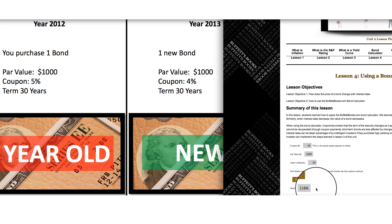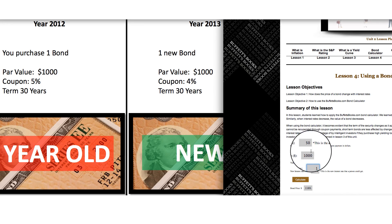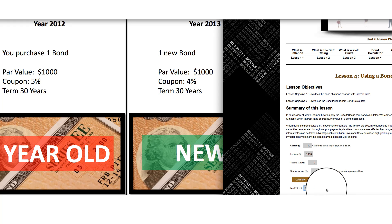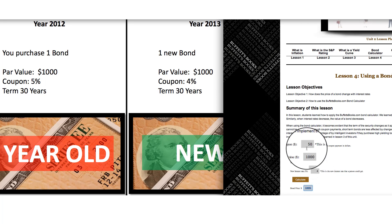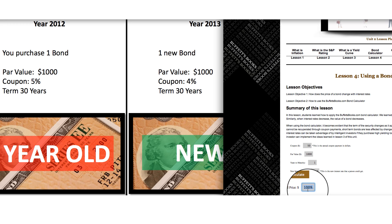What would happen if we changed the years to maturity so only a few years were left? Let's put in one year left on this bond — as if you held it for 29 years and there's only one year left on this 5% bond compared to a 4% coupon bond. The price drops to $1,009. The reason is that the buyer only gets the par value of $1,000 back at maturity, so they only benefit from 1% more than they could get elsewhere for just one year — that's why the price only goes up by $9 to $10.